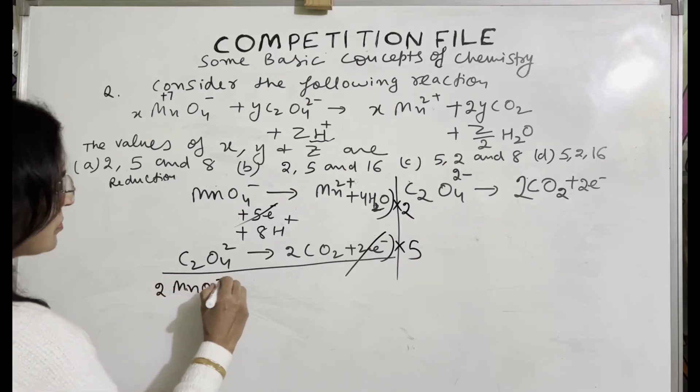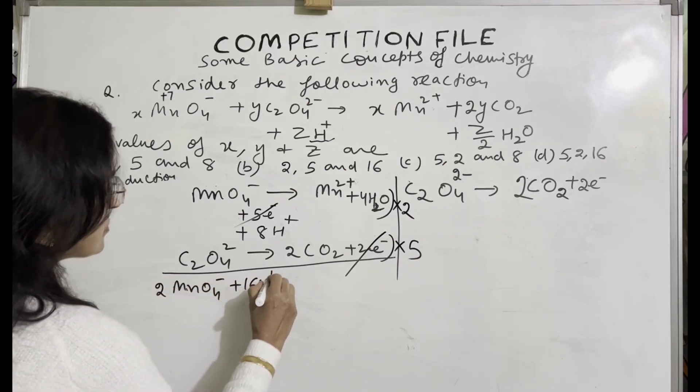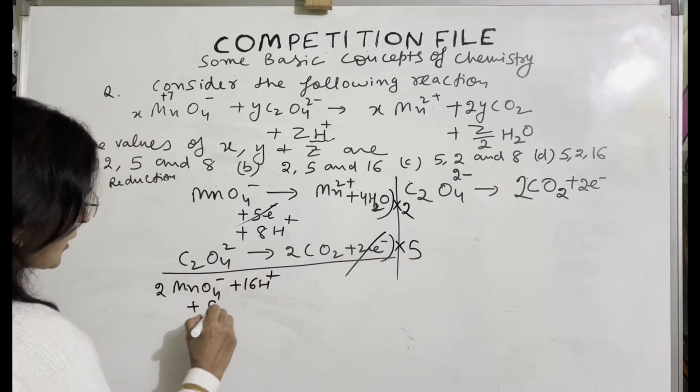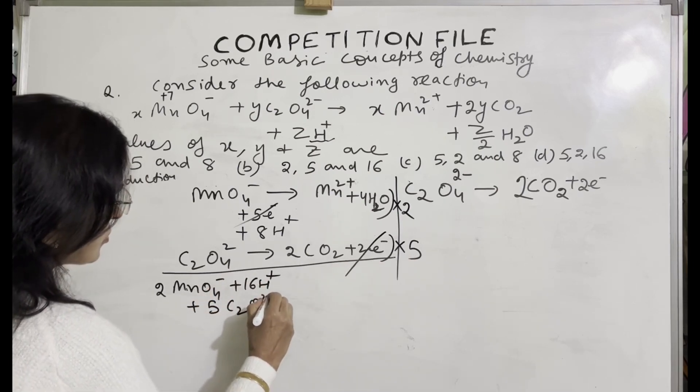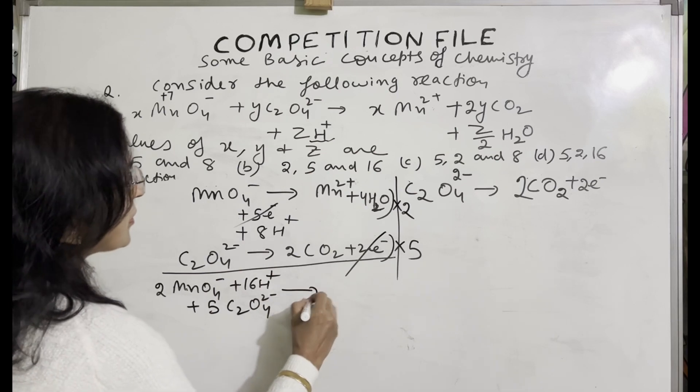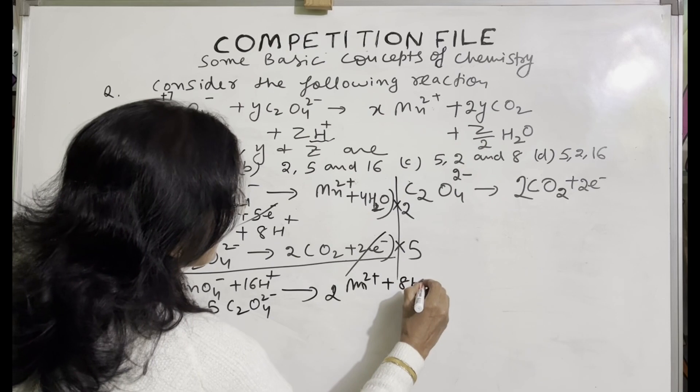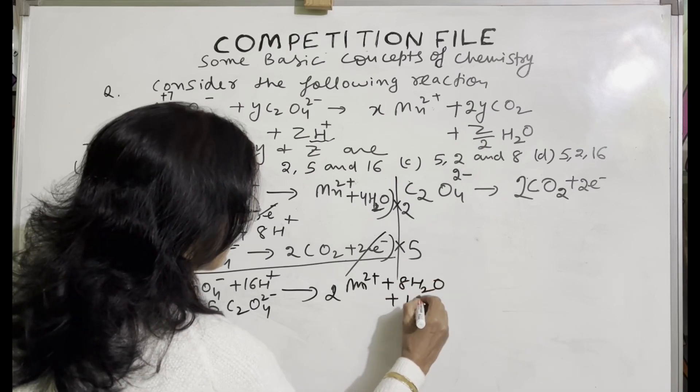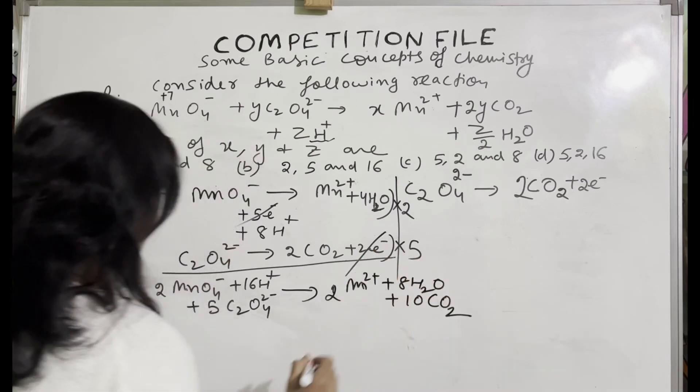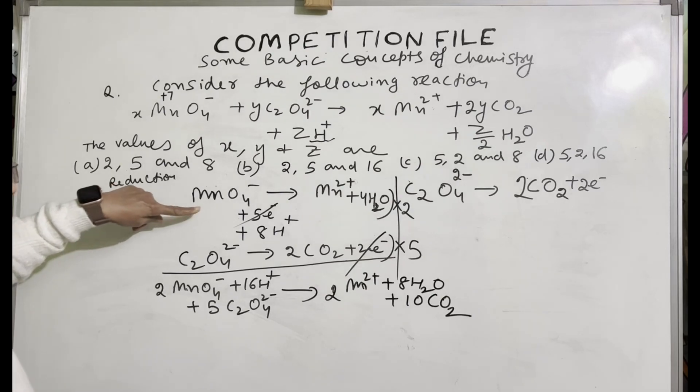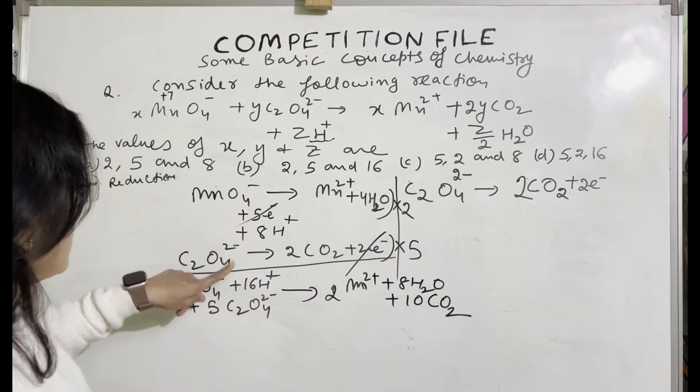Now we'll write it after adding: 2 MnO4 minus plus 16 H plus plus 5 C2O4 2 minus giving 2 Mn 2 plus plus 8 H2O plus 10 CO2. Now check.